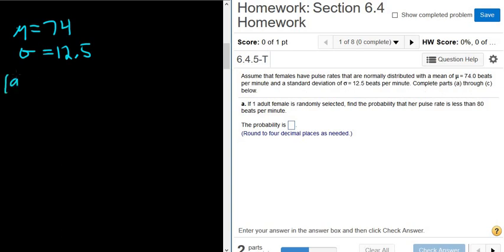Part A: If one adult female is randomly selected, find the probability that her pulse rate, so we'll let X be her pulse rate, is less than 80 beats per minute. That's it.